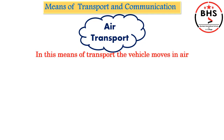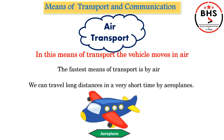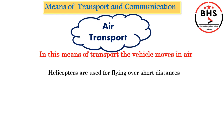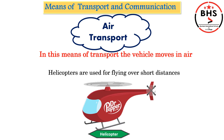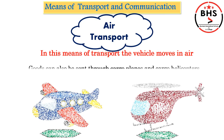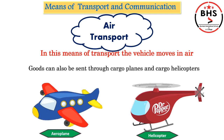In air transport, the vehicle moves in air. The fastest means of transport is by air — we can travel a very long distance in a very short time by aeroplanes. Helicopters are used for flying over short distances. Goods can also be sent through cargo planes and cargo helicopters, which are the planes and helicopters used to transport goods.